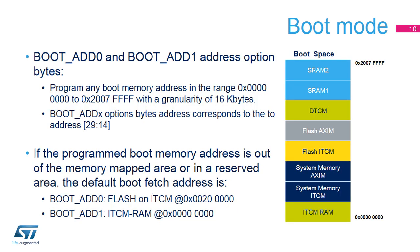Boot ADD0 and boot ADD1 address option bytes allow programming of any boot memory address from 0x00000000 to 0x2007FFFF, including all flash address space mapped on the ITCM or AXIM interface, all RAM address space including ITCM, DTCM RAM, SRAM1 and SRAM2, and the system memory boot loader. The boot ADD0 and boot ADD1 option bytes can be modified after reset in order to boot from any other boot address after the next reset.